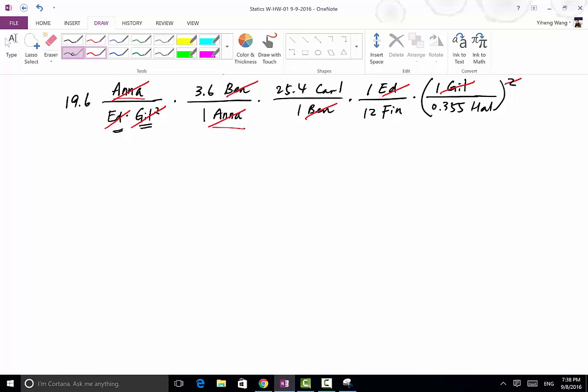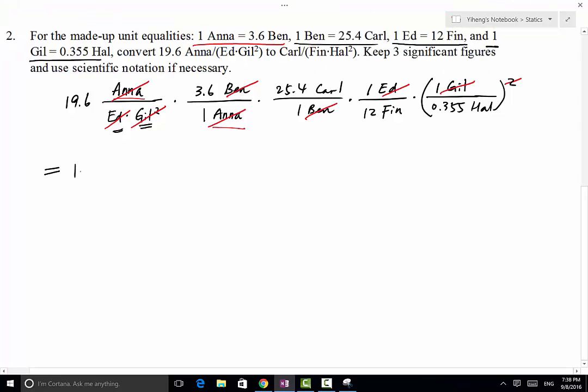So let's collect all the numbers. We have 19.6 multiply by 3.6 multiply by 25.4 and then multiply by 1 over 12 and then multiply by 1 over 0.355. Don't forget that is raised to the second power. And the unit left is going to be Carl over Fin and then Hall squared.